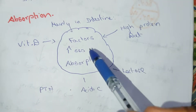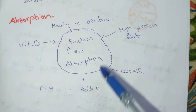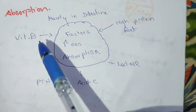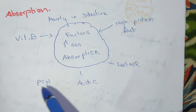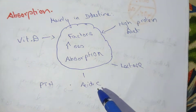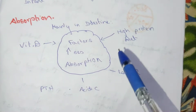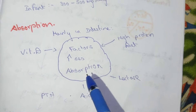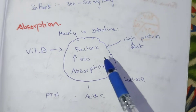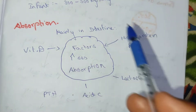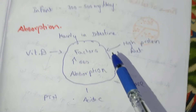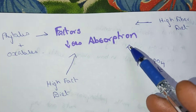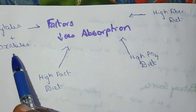Calcium absorption occurs in the intestine. The factors which increase calcium absorption are vitamin D, parathyroid hormone, acidic environment, lactose, and high protein diet.